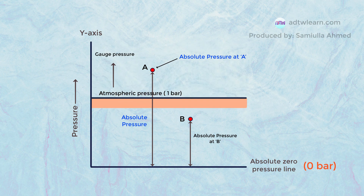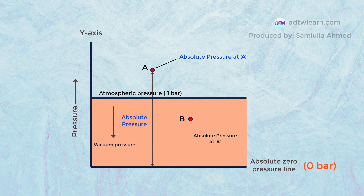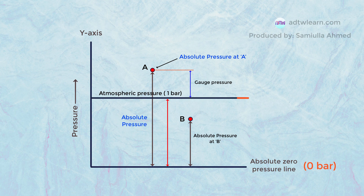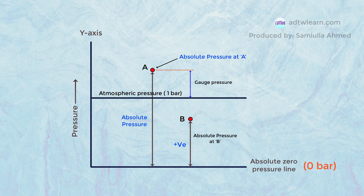And the pressure measured below this line is called vacuum pressure. For example, if we measure the value of pressure at point A from atmospheric pressure, then this pressure is called gauge pressure. But if we measure pressure from the absolute pressure line, that pressure will be different because it will have this extra value of pressure, and it is called absolute pressure. Consider point B — when we measure the value of pressure from the absolute pressure line, this value will be positive and it is called absolute pressure at point B. But if we measure the value of pressure at point B from the atmospheric pressure line, this value will be negative, and it will be called vacuum pressure.